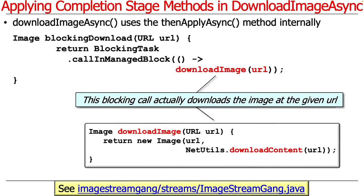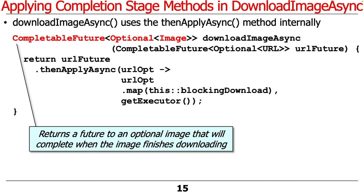Then we download the image. Basically, downloadImage opens up a socket to the remote server where the URL resides, then reads it one chunk at a time until it gets the entire image downloaded — that is a synchronous blocking call. We wrap it in callAndManagedBlock to make sure we grow the pool, and the whole thing is called in the context of an asynchronous operation so it doesn't block the caller. What gets returned from DownloadImageAsync is a CompletableFuture to an Optional image — either with an image being downloaded or empty if URLOpt was empty. It's a clever and clean approach. That's the end of the discussion of DownloadImageAsync.